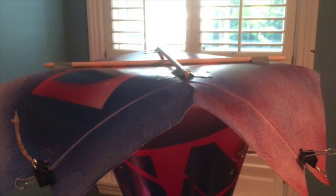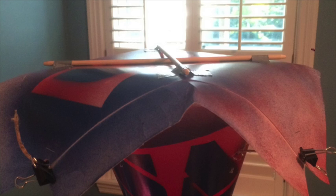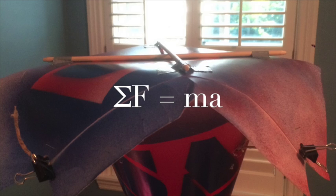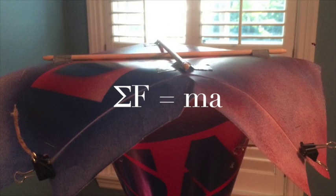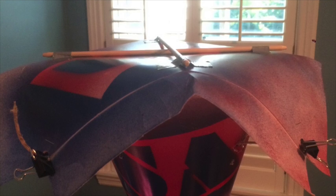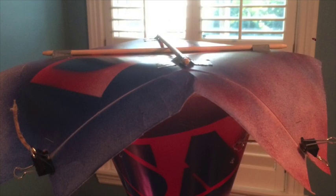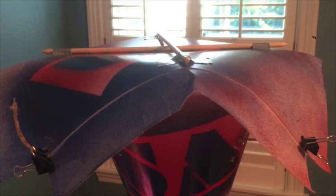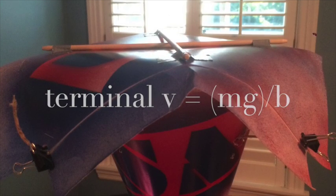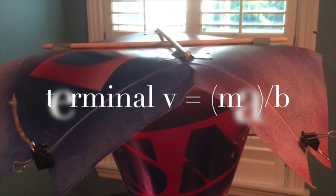This increase in drag force made the net force acting upon the structure less downward. According to Newton's second law, with a constant mass, decreasing the net force will proportionately decrease the acceleration. Modeling resistive forces as a linear function of velocity, the terminal velocity will be equal to mg over b, which means a lower acceleration will equate to a lower terminal velocity.